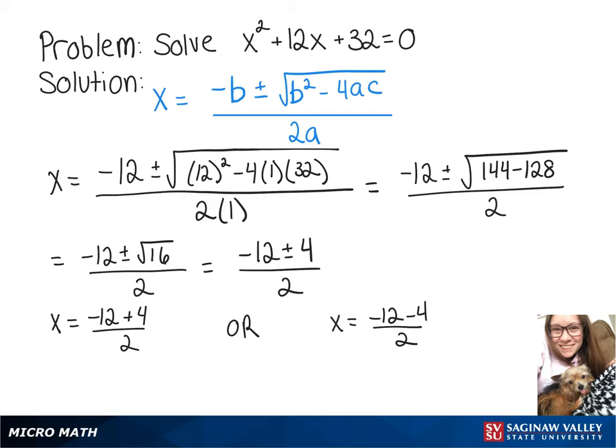So negative 12 plus 4 gives us negative 8 divided by 2 gives us one possible solution, x equals negative 4, or negative 12 minus 4 gives us negative 16. When we divide that by 2, we get negative 8.